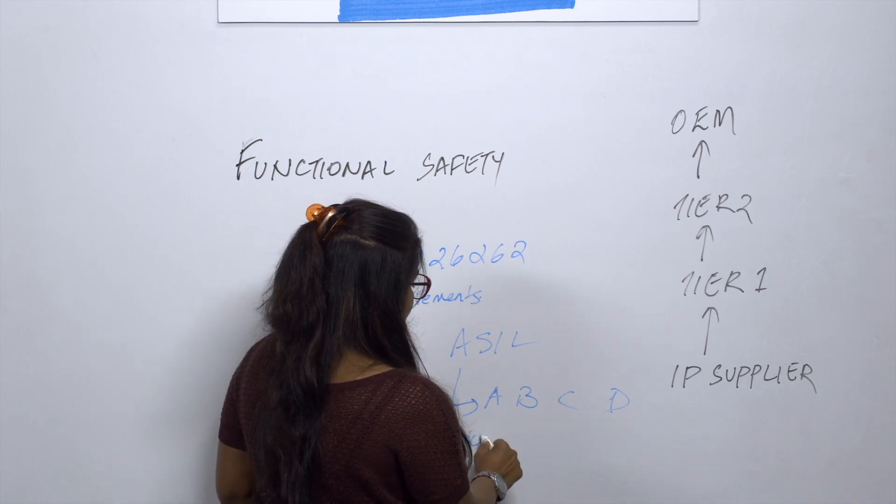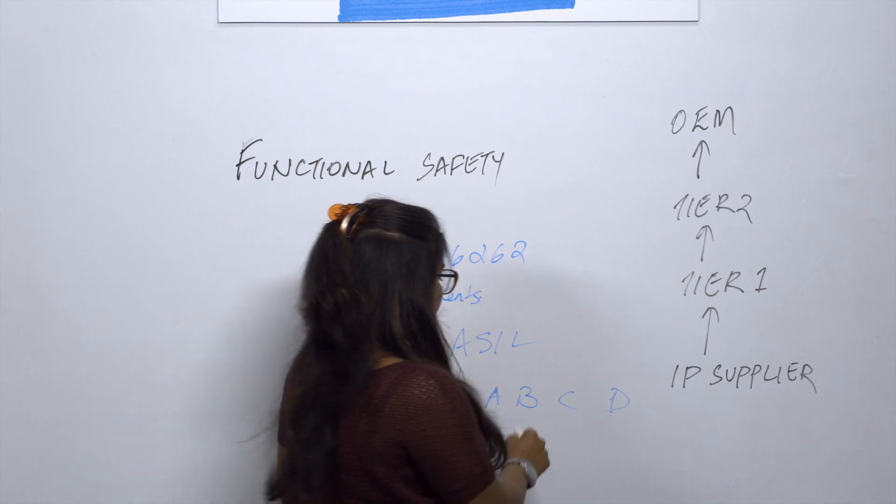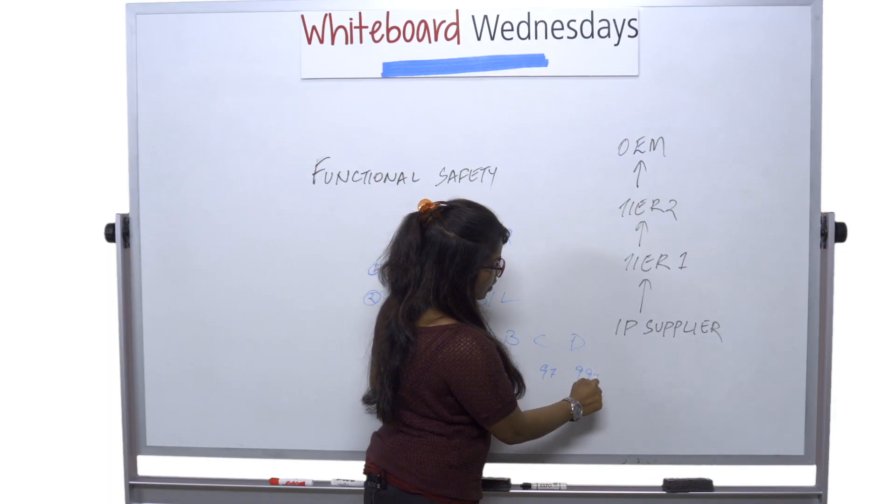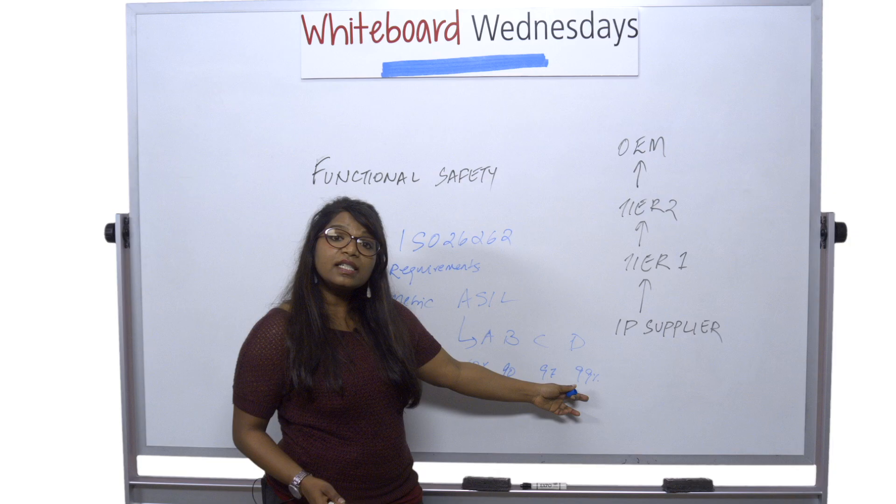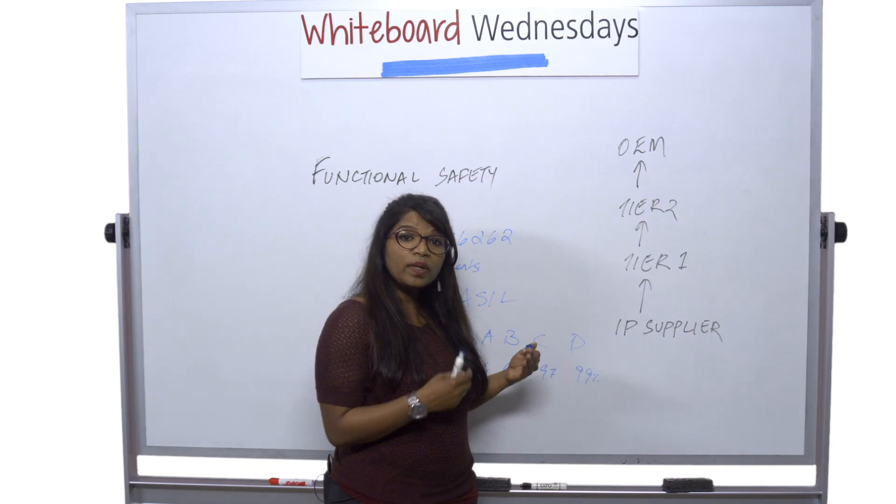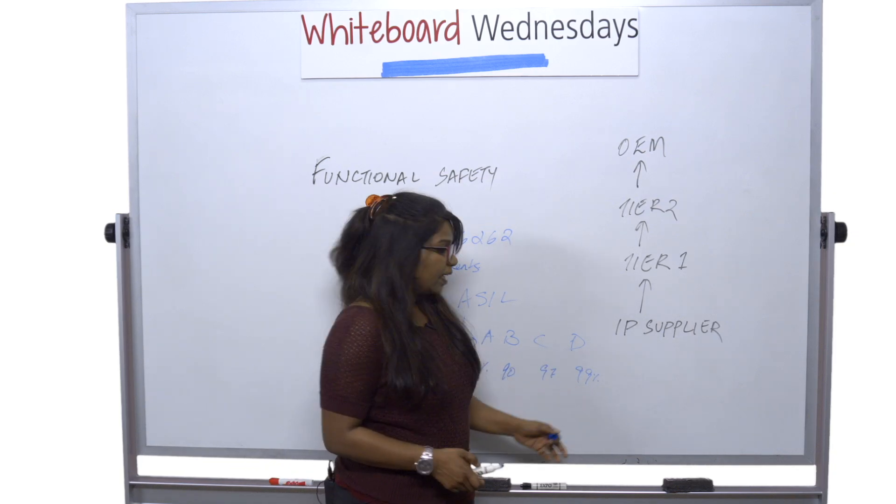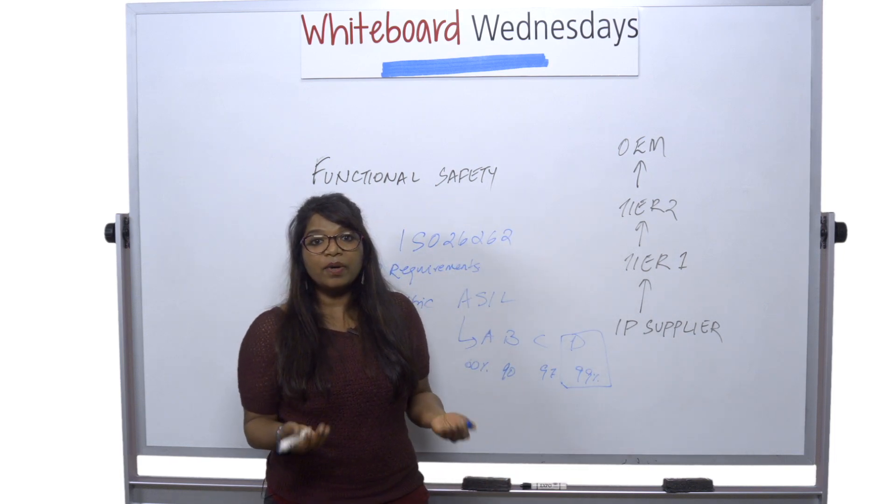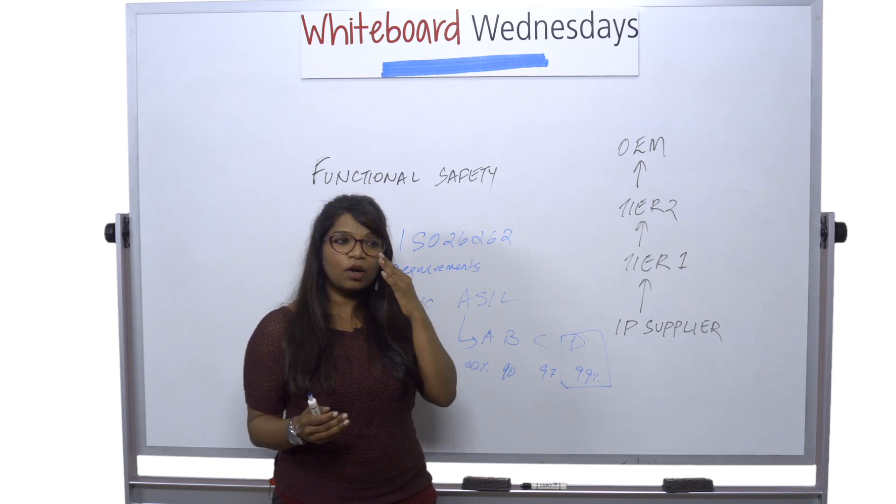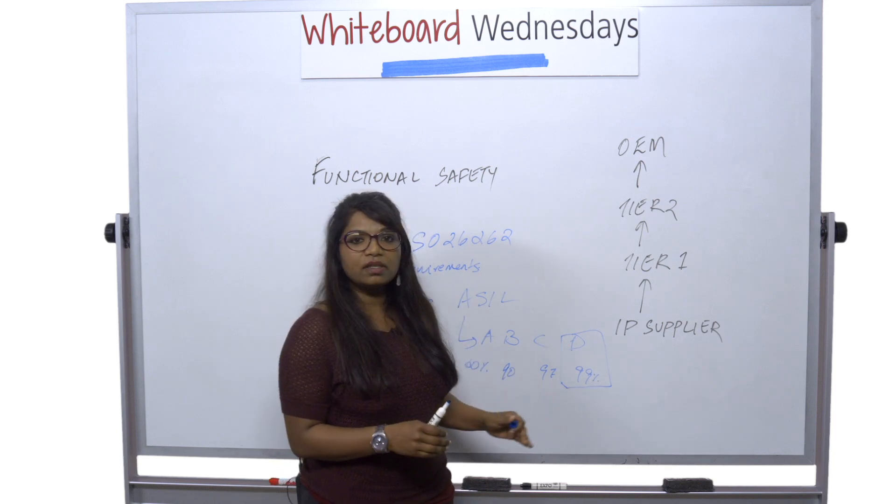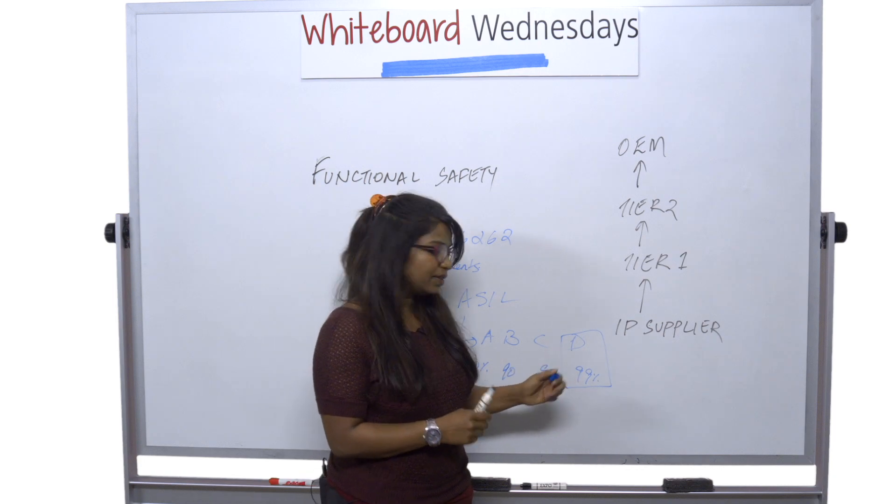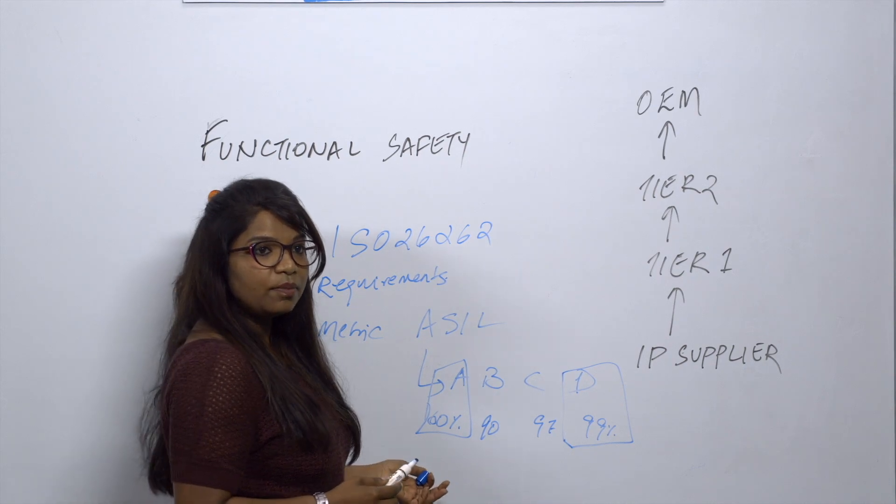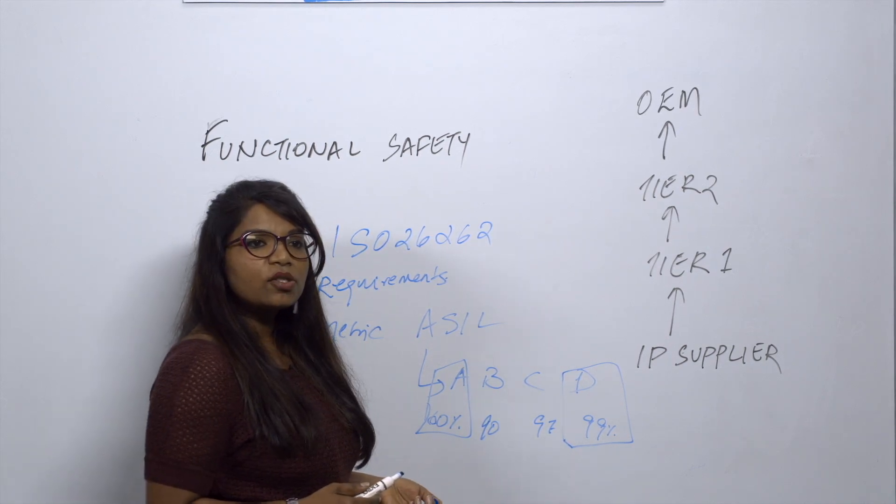The ASIL A has a 60% safety level that you need to meet. B has 90, C has 97, and D has 99%. So ASIL D has the highest level of safety which means your risk is super low here. So mostly in an ASIL D targeted application for example you're trying to make a braking system. So you minimize the risks to almost a negligent level. And ASIL A for example you have a low ASIL target to meet. This is where you have applications like a rear light.